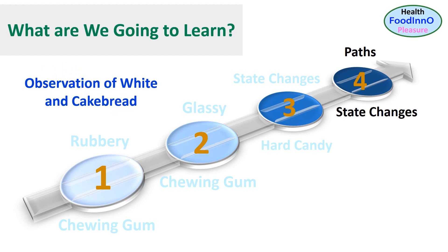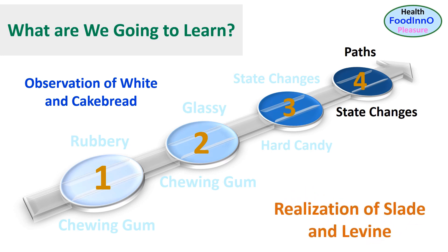Finally, I am going to explain the observations of Dr. Boyd and Dr. Cakebread in relation to sugar-based food products, and then the realization of Dr. Slade and Dr. Levin. They visualized and explored extensively the glass transition concept and its relationship with food quality and stability.